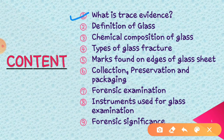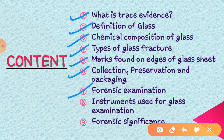In glass, we start from the definition of glass, then the chemical composition of glass. After this, the types of glass fractures, then the marks found at the edges of glass sheet. And then we will discuss the collection, preservation and packaging of glass evidence. Then the forensic examination of glass, then the instruments used for glass examination, and at last we will discuss the forensic significance of glass evidence.